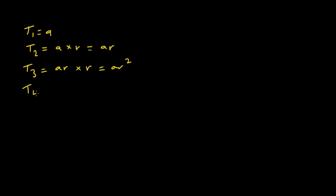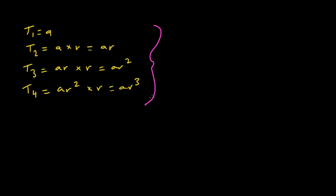T4 equals AR squared times R, which is AR cubed. There's a small pattern here: term 2 gives AR, term 3 gives AR squared, term 4 gives AR cubed. The power is always one less than the term number. So we can conclude that the formula is: Tn equals A times R to the power of n minus 1.